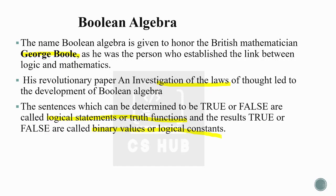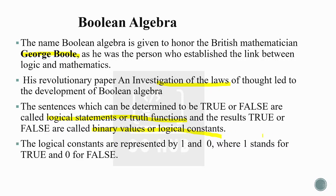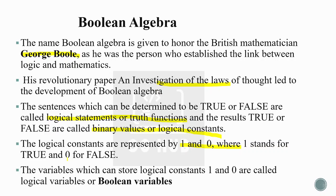0 and 1 — or true and false — are binary values and logical constants. These logical constants are represented by 1 and 0, where 1 is true and 0 is false. The variables which can store logical constants 1 and 0 are called logical variables or Boolean variables. Boolean algebra is a mathematical algebra that deals with variables storing zeros and ones.